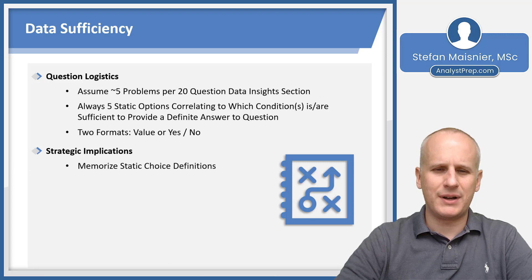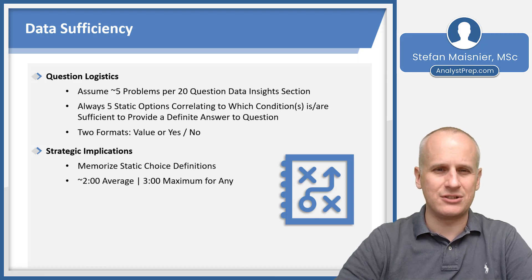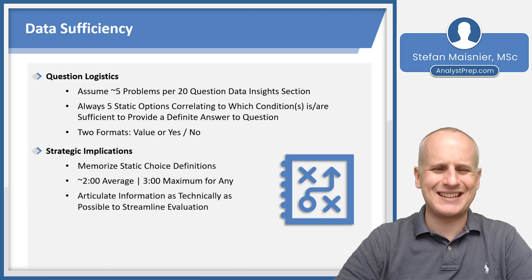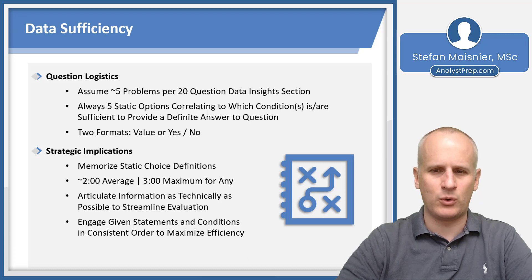Strategically, you must first memorize the static choice definitions, and we'll do that here in a moment. You're going to assume about two minutes as an average for your data sufficiency questions, and you're going to have a hard three minute maximum for any. In some cases you may just determine that you're not really getting anywhere, and because the data sufficiencies are self-contained, you may decide to make an educated choice halfway through the problem. You'll also have to articulate the information as technically as possible to streamline your evaluation, and you'll engage statements in a consistent order to maximize efficiency.